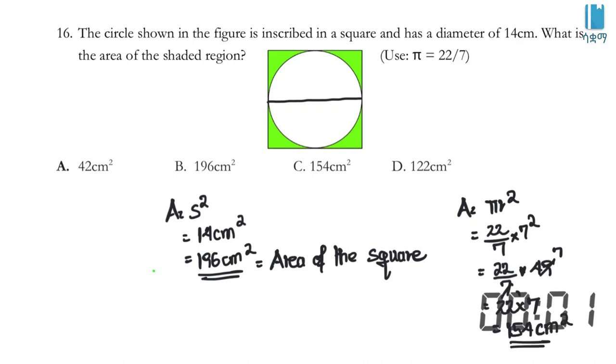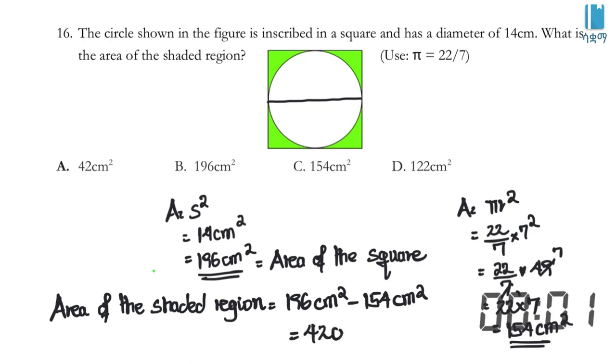22 over 7 times 400 equals 22 times 400 over 7. Seven goes into this, giving us approximately 1257 centimeter square for the area of the circle. The area of the shaded region is area of the square minus area of the circle, which is 1600 minus 1257, giving us approximately 343 centimeter square.